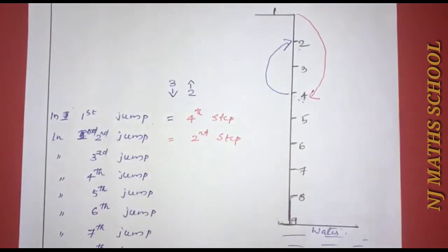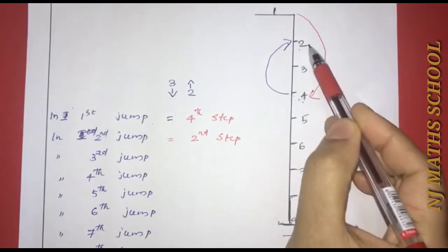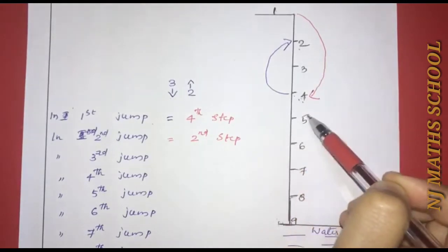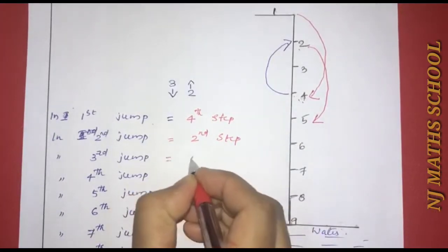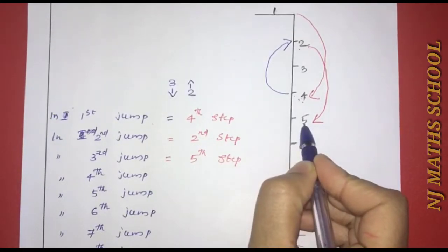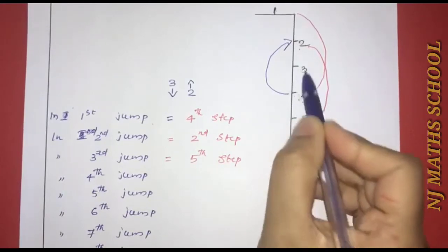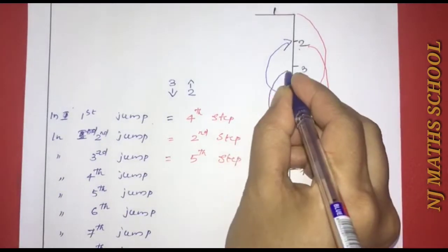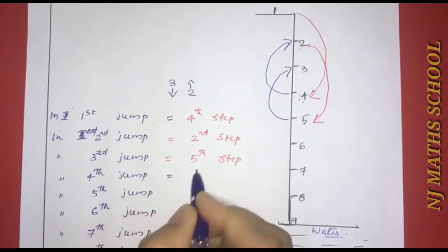Now what is the third jump? From the second step, three steps down — now at the fifth step. Two steps back up — now at the third step. We are going to the fourth step, then the third step.